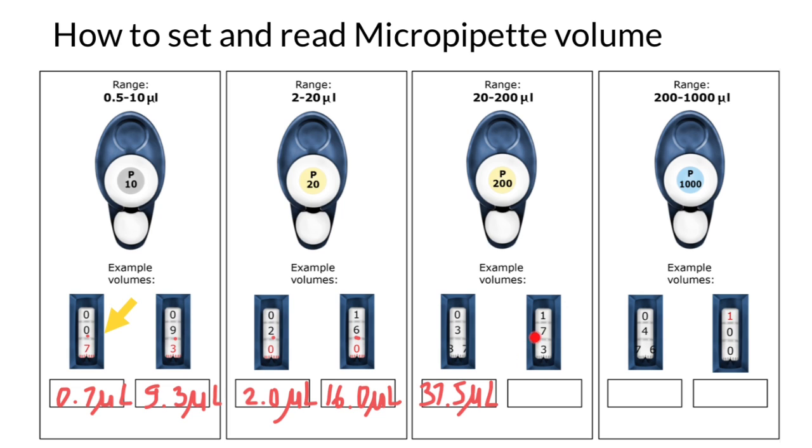And what do we have here on the right? As you see, we don't have any red numbers here, just like here. So we don't have any decimal point here. And we just read exactly what we see. 173 microliters. And as you see, both these readings are within this range.